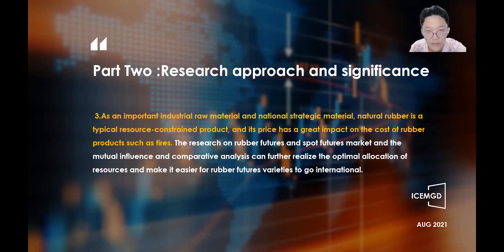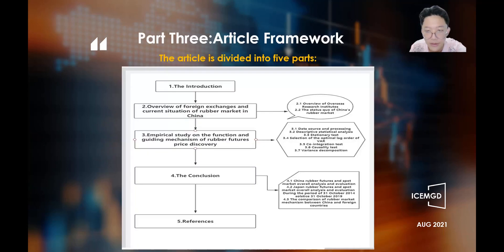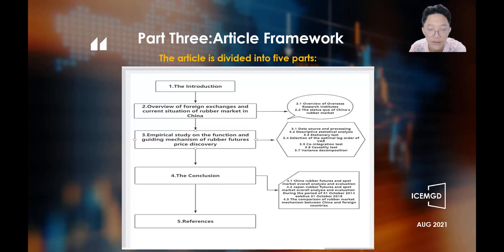The third part is the framework of the article, which is divided into five parts: the introduction; overview of foreign exchanges and current situation of the rubber market in China; empirical study on the function and guiding mechanism of rubber futures price discovery; the conclusion; and the references.